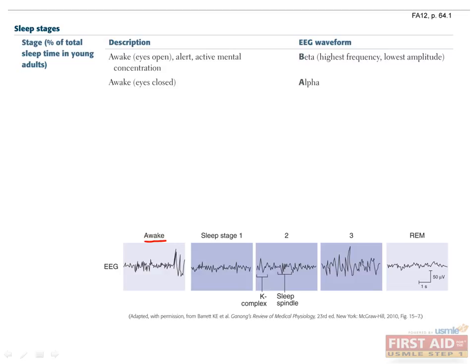When someone is awake but their eyes are closed, the EEG waveform observed is an alpha waveform. In the first stage of sleep, which is the lightest stage and comprises about 5% of total sleep time in young adults, the EEG waveform observed is a theta waveform. Which neurotransmitter is critical for initiating sleep? Serotonin release from the raphe nuclei.